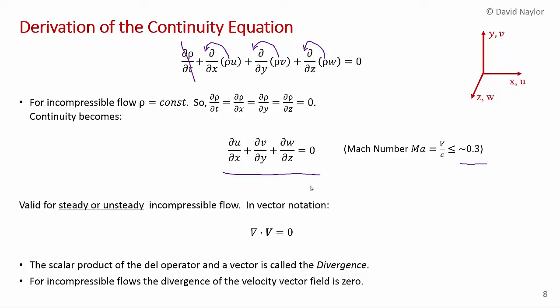Somewhat surprisingly, this incompressible equation is valid for both steady and unsteady incompressible flows — you haven't assumed steady flow to get here. In vector notation, this simply becomes ∇·V = 0. In mathematics, this scalar product of the del operator and a vector is called the divergence, so in fluid mechanics we say that in incompressible flows, the divergence of the velocity vector is zero.